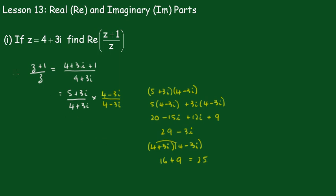Putting that together, we get that's equal to 29 minus 3i over 25.